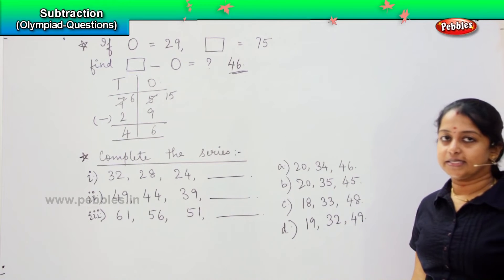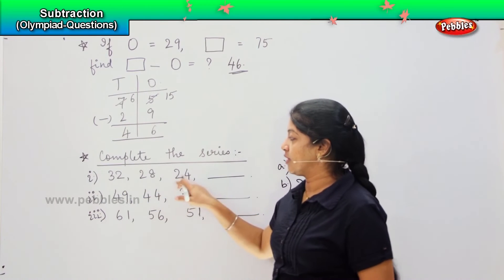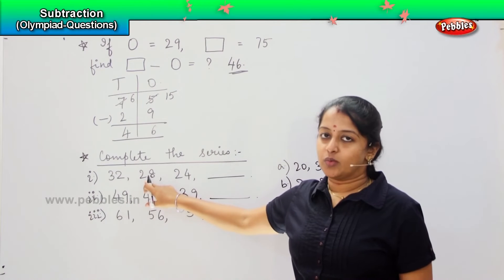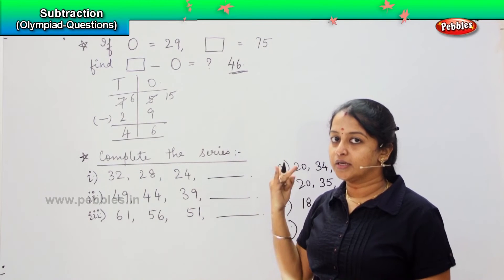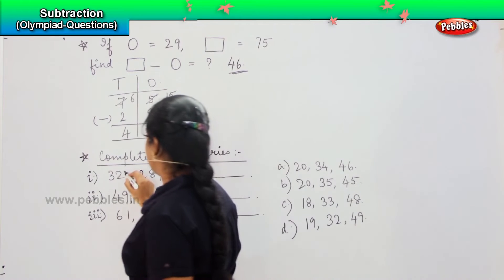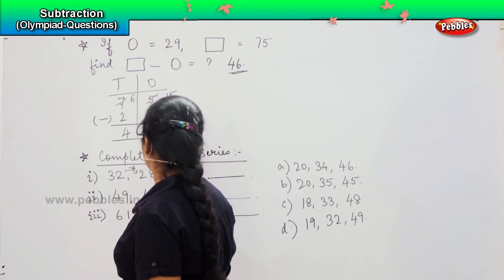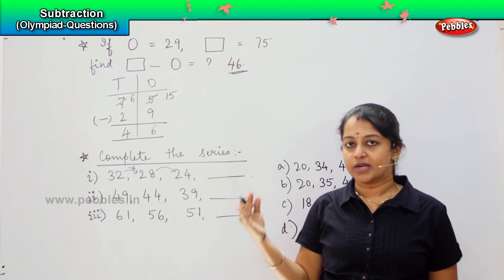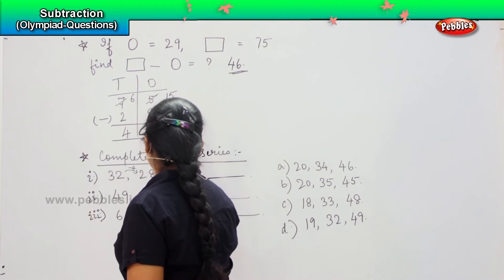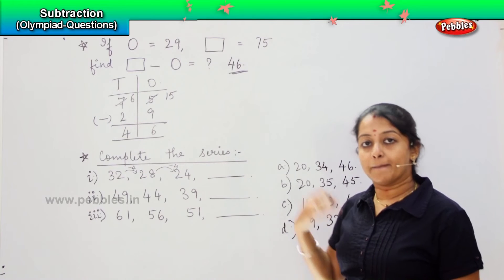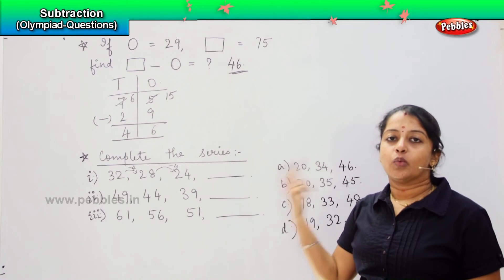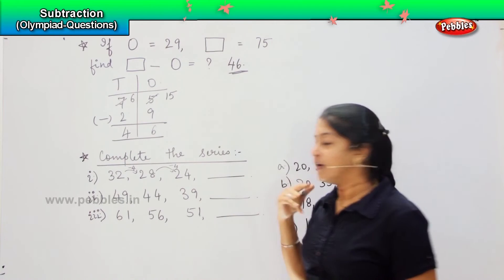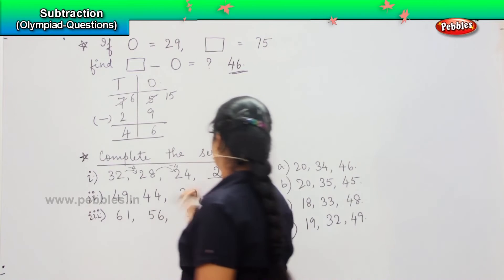So you need to complete the series. First we need to find out what is the difference value between the first and the second number. So 32 and 28, what is the difference value? They are skipping minus 4. And what is the difference between 28 and 24? Which means that they are doing a skip counting of 4 backward. So 24, what will be the next 4 digit? 23, 22, 21 and 20.